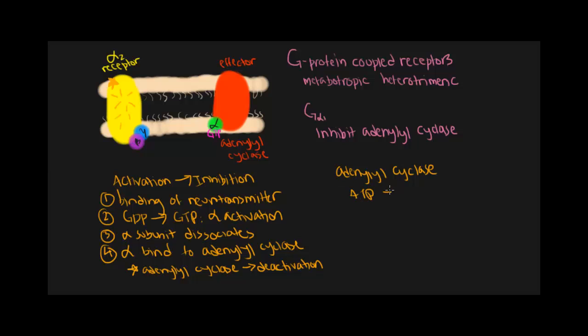However, when adenyl cyclase is deactivated as caused by this mechanism, this will not occur. Because there is no cyclic AMP, cyclic AMP is unable to activate protein kinase A, also known as PKA.